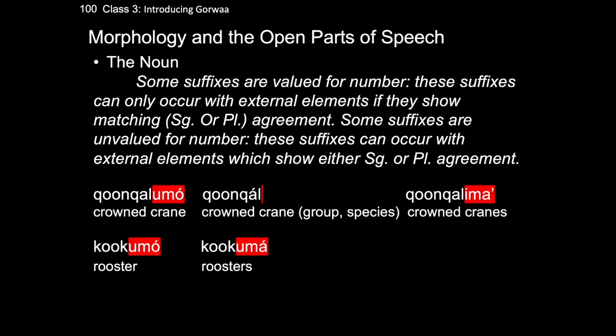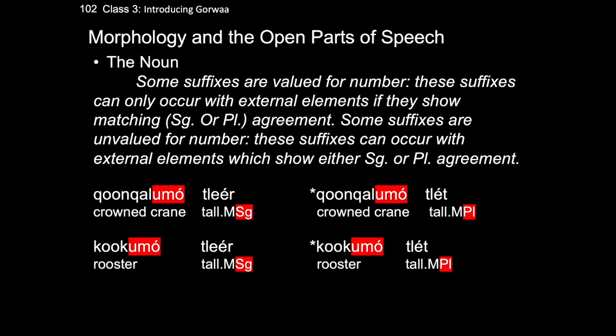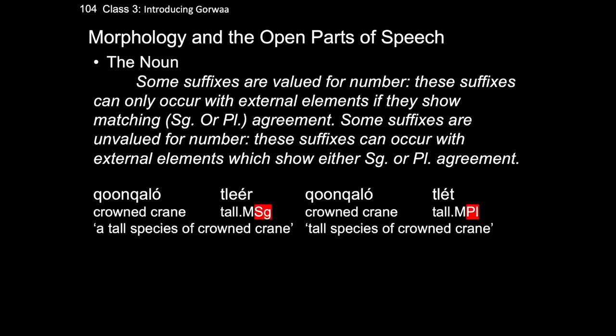Rule three is that some suffixes are valued for number. For example, the suffix umo is valued for singular number. Therefore, nouns with this suffix can only occur with external elements like adjectives which are also singular. If we try to put a noun with an umo suffix with an adjective in a plural form, the form is ungrammatical. The zero suffix, on the other hand, is unvalued for number, meaning it can occur with adjectives which are either singular or plural. These combinations often result in a collective sort of reading.